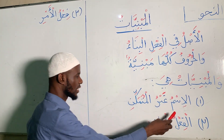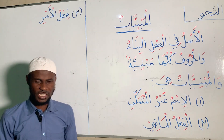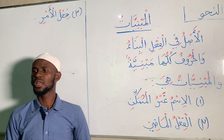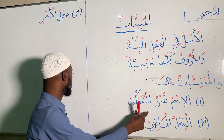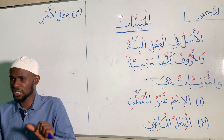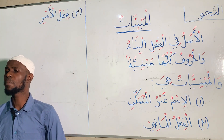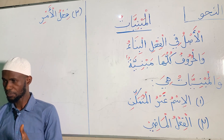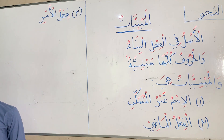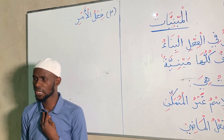Now let's look at Al-Mabniyat properly. They say they are Al-Ismu Ghayru Al-Mutamakkin — the nouns that do not have the capacity to change; they maintain stagnancy. Then the next one is Al-Fi'lul Madhi: all past verbs in Arabic language are Mabniyat, maintaining stagnancy. Then the last is Fi'lul Amri: all command verbs in Arabic language maintain stagnancy.